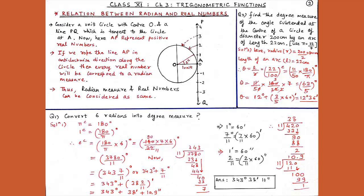We get theta equals 11 upon 50 radian. Since theta always comes in radian and the question asks for degree measure, we convert by multiplying by 180 upon π. Putting π equals 22/7, we get theta equals 63 upon 5 degrees. Dividing 63 by 5, quotient is 12 with remainder 3, so 63 upon 5 equals 12 degrees plus 3 upon 5 degrees. Converting 3 upon 5 degrees into minutes: 3 upon 5 into 60 equals 36 minutes. Therefore theta equals 12 degrees 36 minutes.